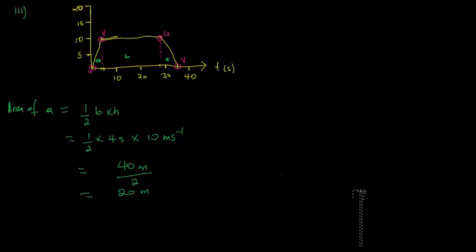Next we find the area of part B. Since this is a rectangle, the area equals length times width. The length is 24 seconds and the width is 10 meters per second. That works out to be 240 meters.